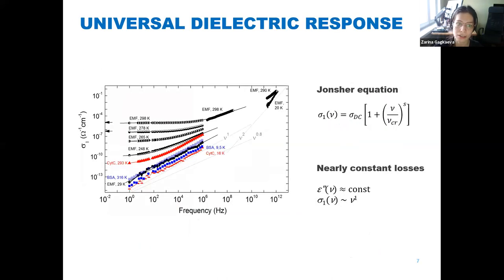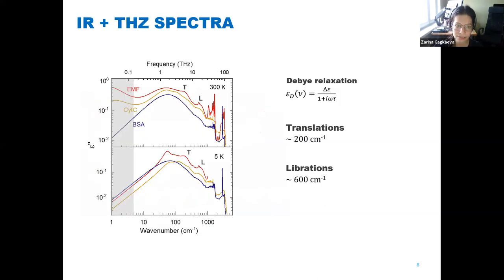So we saw the conductivity in EMF. Here, this shoulder in the low frequency part of spectra shows the existence of Drude-type conductivity in EMF. The same was observed by orders of magnitude lower in the cytochrome C, while no conductivity was observed in BSA. And this interestingly correlated with the Debye response of bound water in the terahertz frequency range. Here on the left, you can see the Debye relaxation in EMF and in cytochrome, while there is none in BSA.